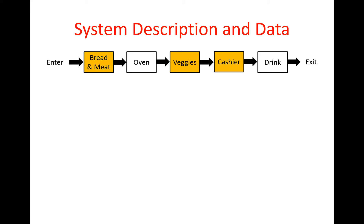The system we're going to model is basically similar to a serial production line. Customers enter the restaurant and go to the first stage where they choose the type of bread, meat, and cheese for their sandwich. Then customers go to the next stage, which is the oven. If they want their sandwich toasted, the worker puts the sandwich in the oven and it gets heated and toasted.